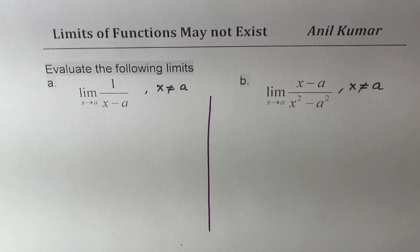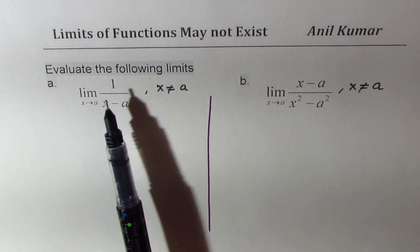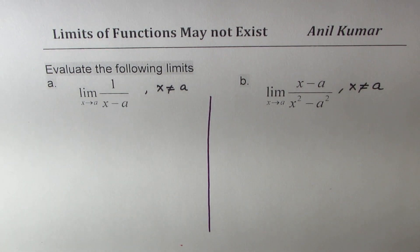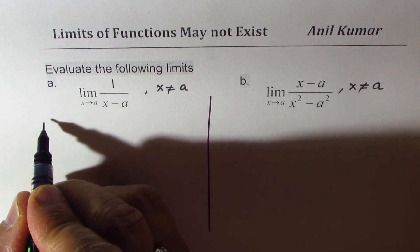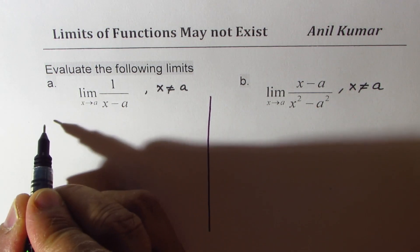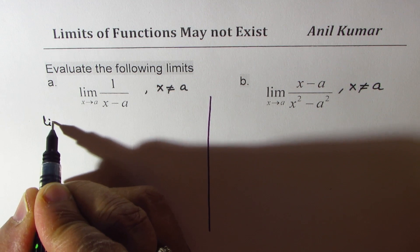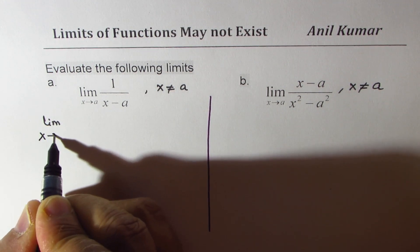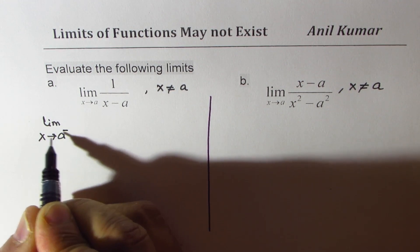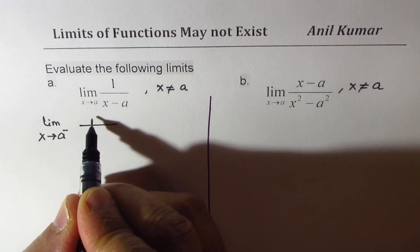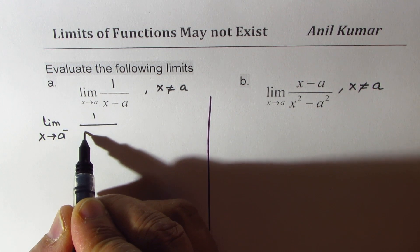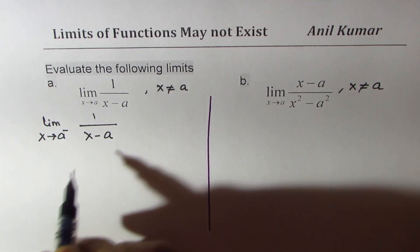So the first one here is limit when x approaches a for this particular function. Now, we can find the left side and the right side limit. So we'll break this down as limit when x approaches a from the left side, that minus means from the left side, for the particular function, which is 1 over x minus a.